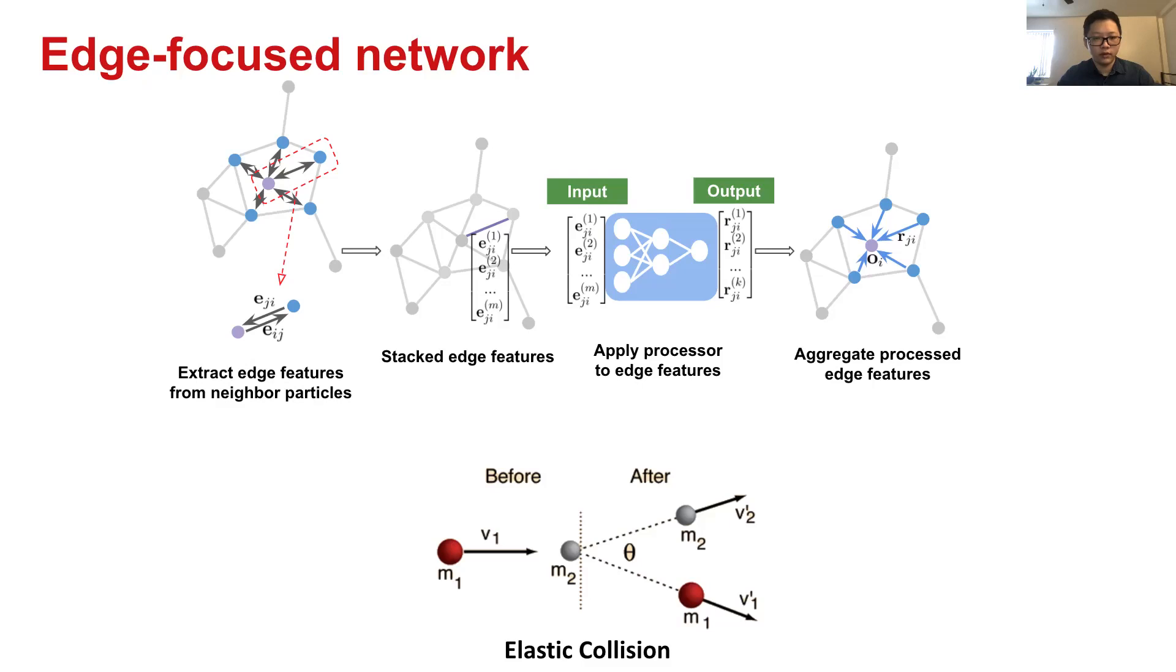Instead, they are more like a process based on relative position and relative velocity. We input relative position and relative velocity as the input of collision net. And then we use the shared multi-layer perceptron on every edge to learn the high-level transformation. And at last, we got edge embedding.